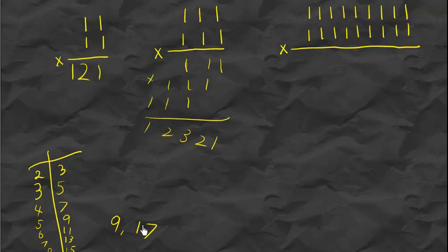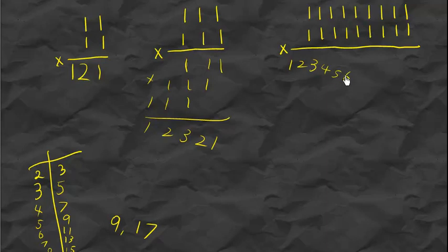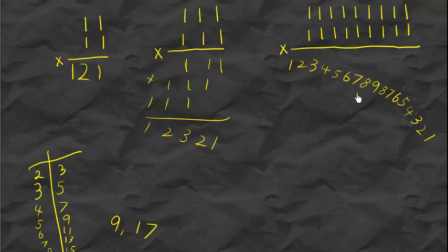To find the answer, which has seventeen digits: since 111 times 111 goes up to three and back, this must go up to nine and then back — one, two, three, four, five, six, seven, eight, nine, eight, seven, six, five, four, three, two, one. Counting the digits: one through seventeen, just as predicted.